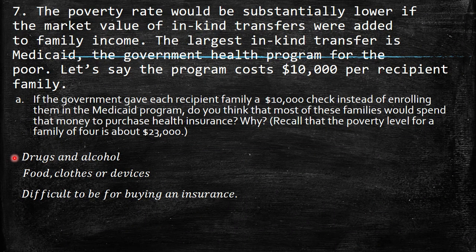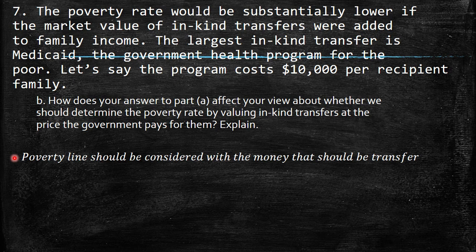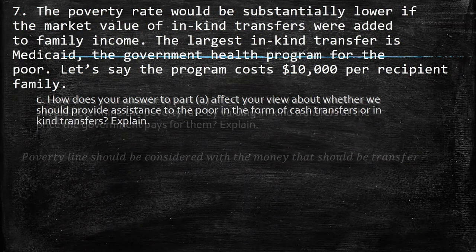Part B: How does your answer to part A affect your view about whether we should determine the poverty rate by valuing in-kind transfers at the price the government pays for them? Obviously, the poverty line should be considered with the money that is transferred. More people would then be above the poverty line, because when you add the monetary value of in-kind transfers, the total income may exceed the poverty threshold.